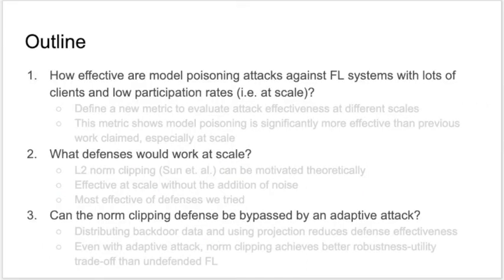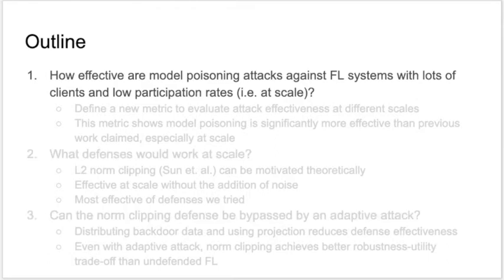Through three overarching questions, we present the case for the unrecognized effectiveness of model poisoning attacks, explaining why and how previous work has severely undersold how easy it is for a small number of adversaries to insert many backdoors into an image classification model. We evaluate a number of new as well as previously proposed defenses and conclude that L2 norm clipping is the most effective. We then develop an adaptive attack which overcomes the norm clipping defense and evaluate its effect on the utility-robustness tradeoff achievable for federated learning systems.